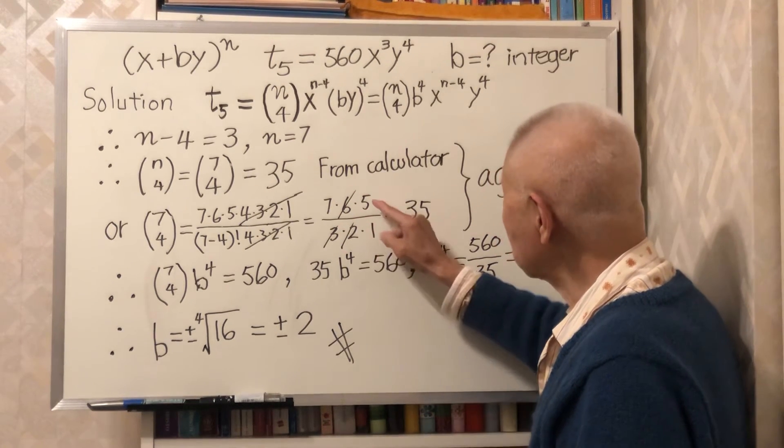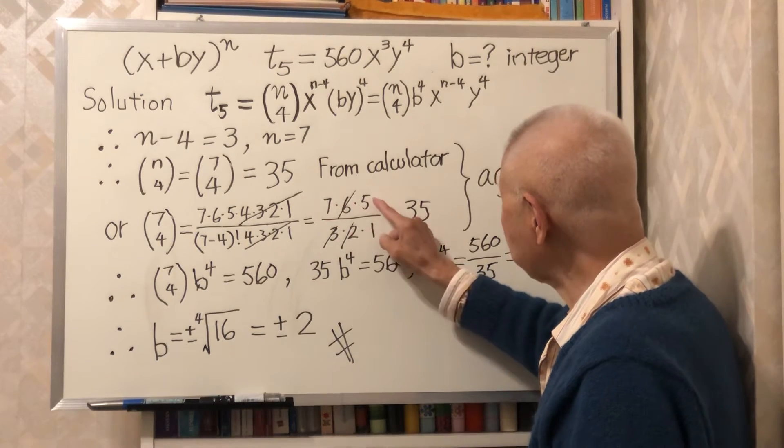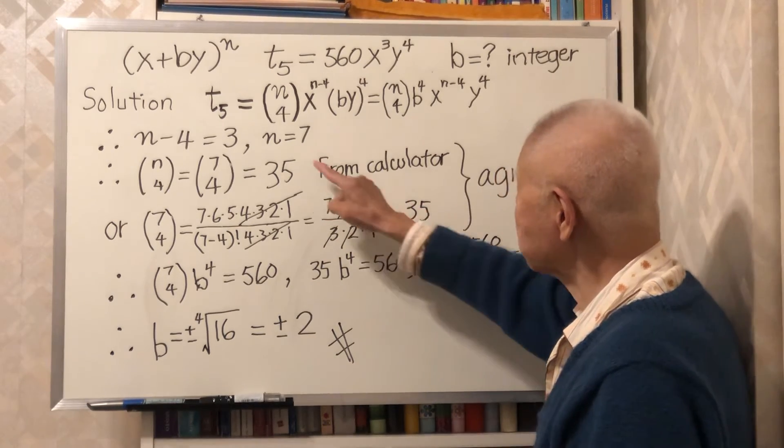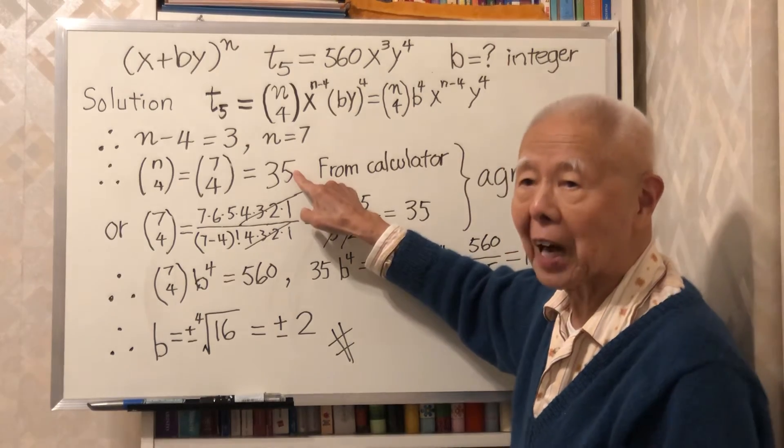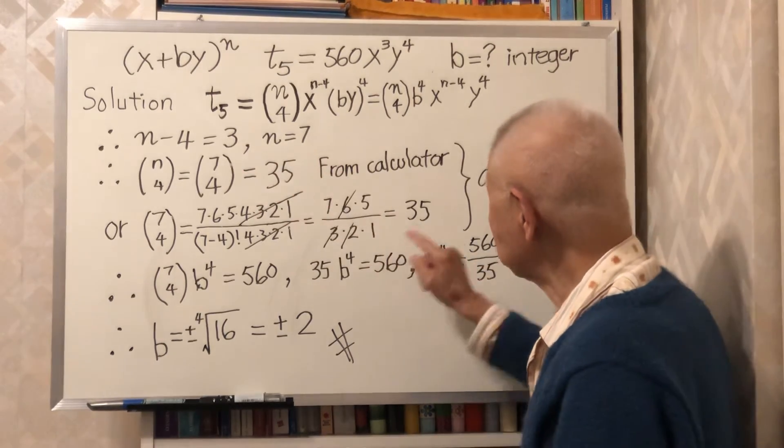What do you have? I have 7 times 5, 7 times 5 is 35, which is exactly if you use a calculator to get this number.